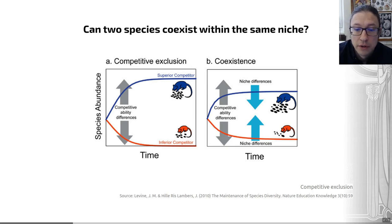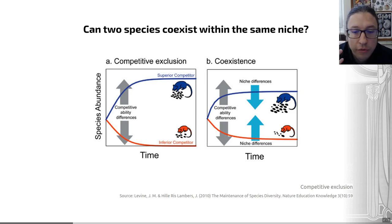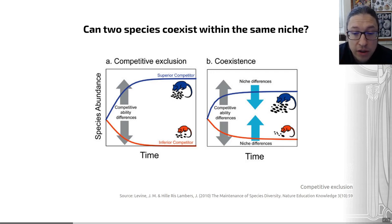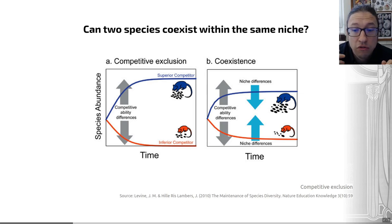Do bear in mind that the impact of competitive exclusion, while shown to occur in some instances, is still debated. How strong the role of niches are in ecosystems is also still debated because real-world ecosystems are very complex. It's also worth noting that niches can be differentiated from each other within ecosystems in several different ways. In the next video I'll be introducing how niches can be differentiated within ecosystems.